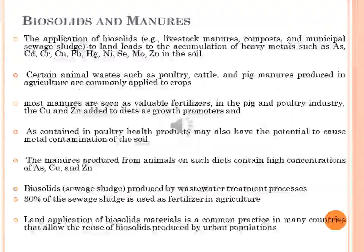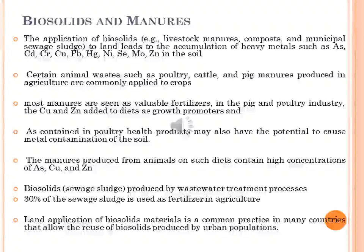The application of numerous biosolids — for example, livestock manure, compost, municipal sewage sludge — to land leads to the accumulation of heavy metals such as arsenic, cadmium, chromium, copper, lead, mercury, nickel, and zinc in the soil. Certain animal waste such as poultry, cattle, and pig manure produced in agriculture are commonly applied to crops and pastures either as a solid or slurry.